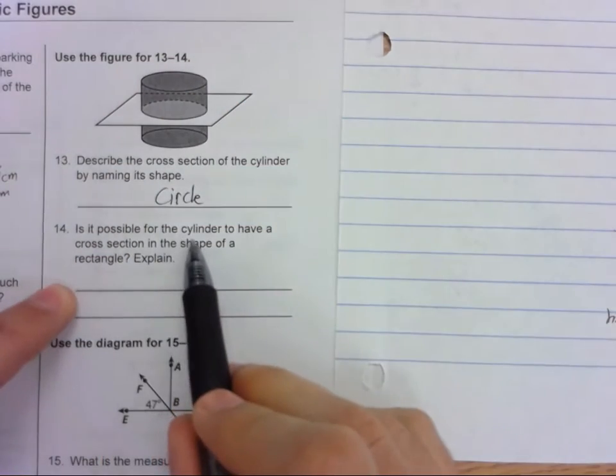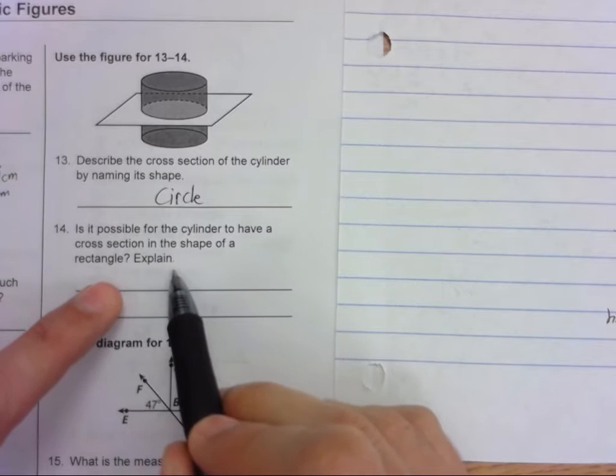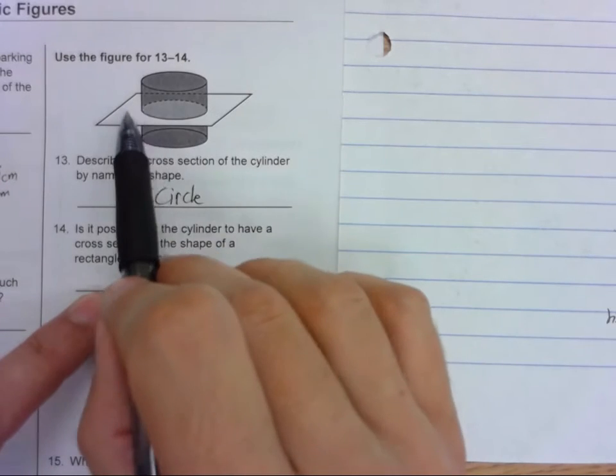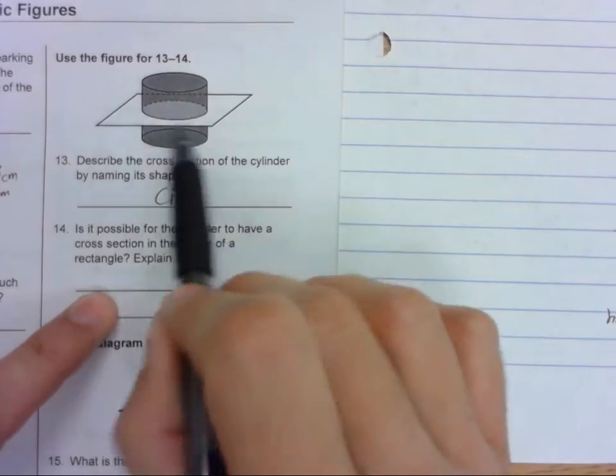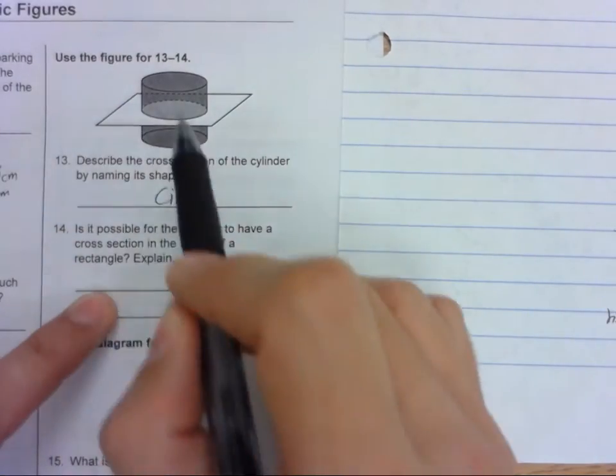14. Is it possible for a cylinder to have a cross-section in the shape of a rectangle? Explain. So could we intersect this plane, or intersect this cylinder with this plane, at any angle to give us a rectangle?